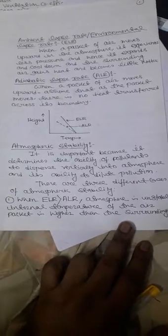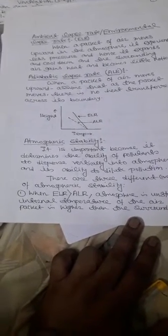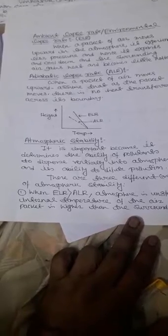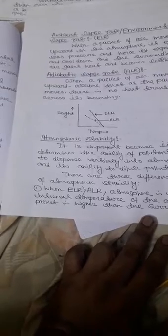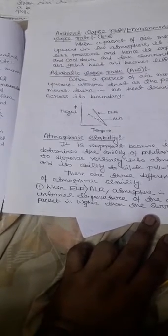Atmospheric stability is important because it determines the ability of pollutants to disperse vertically into the atmosphere and the ability to dilute pollution. There are three cases. First, when ELR is greater than ALR, the atmosphere is unstable because the internal temperature of the air packet is higher than the surroundings.